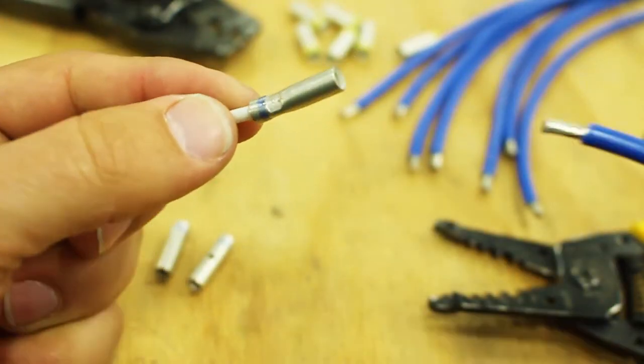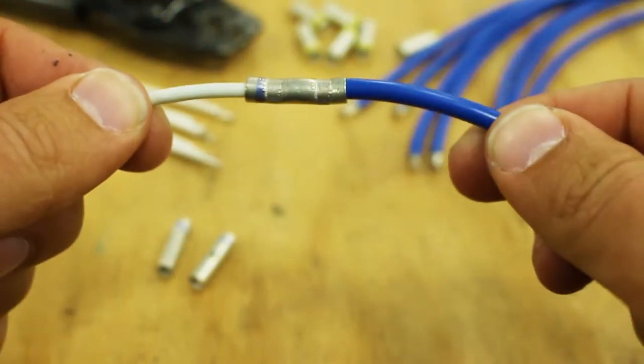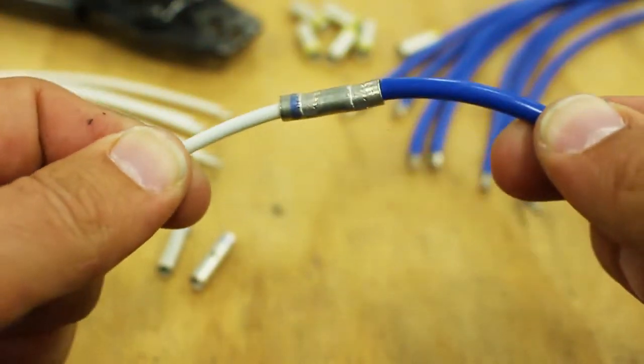We'll repeat the process on the other side with a larger wire. After crimping, perform the tug test to make sure the wires don't pull out.